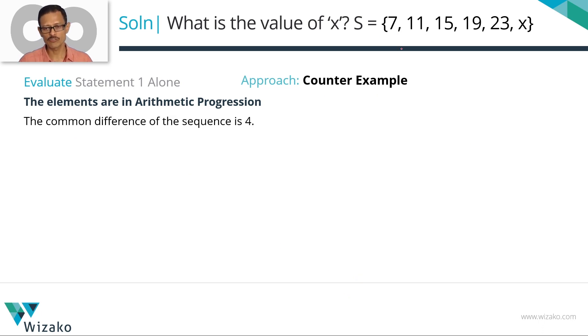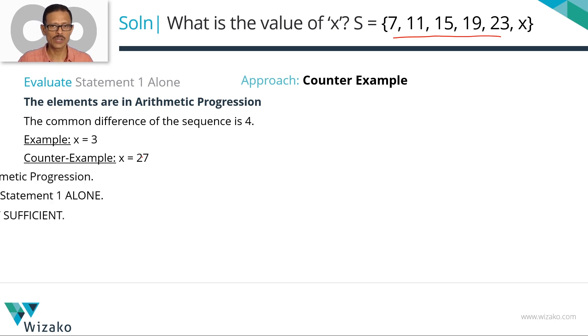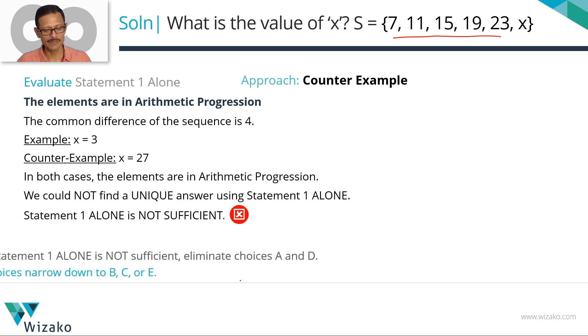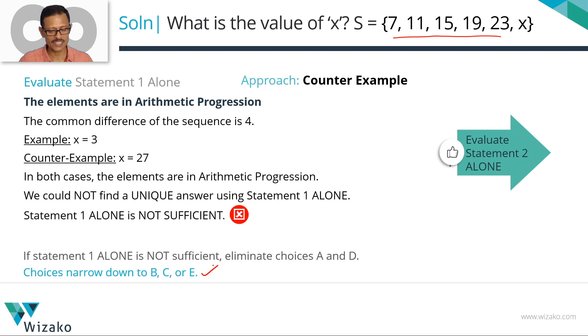The common difference is 4 for the existing elements. They are in an AP. That's evident. What could be the values that x could take? We realized it could be 3 or 27. So we have more than one value. One alone is not sufficient. Eliminate choices A and D. Get down to B, C, or E. Let's move on to statement 2.